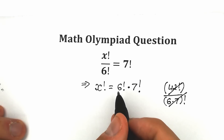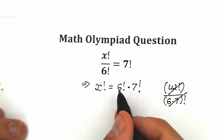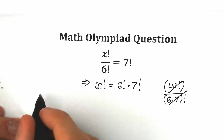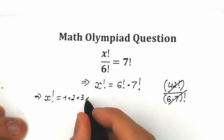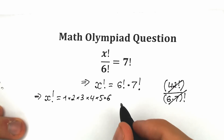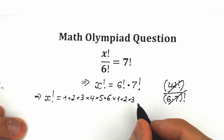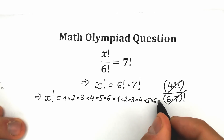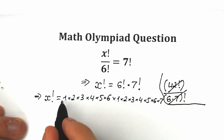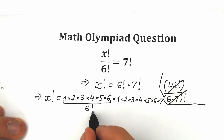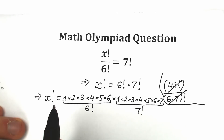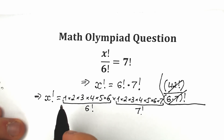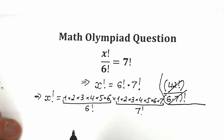What we're going to do instead: let's rewrite 6 factorial as a product. We can write 6 factorial as 1 times 2 times 3 times 4 times 5 times 6, and 7 factorial as 1 times 2 times 3 times 4 times 5 times 6 times 7. We could multiply all these values, but it would give a huge number that makes finding x very difficult.